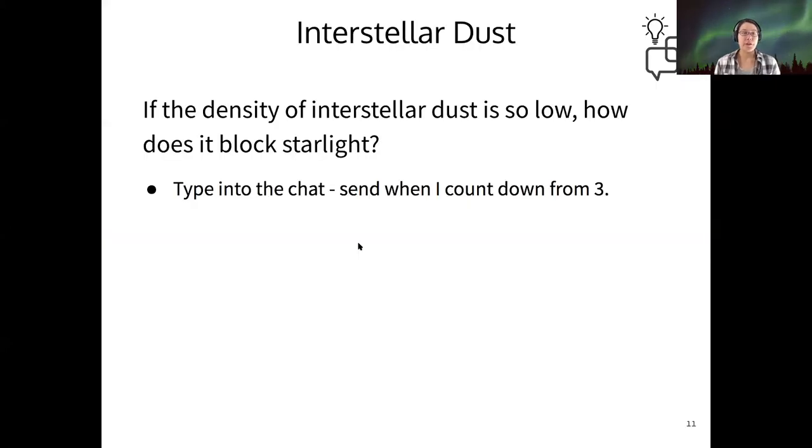So my question for you about this interstellar matter is, if the density of this stuff is so low, then how come it is so effective at blocking starlight from the stars in our disk?